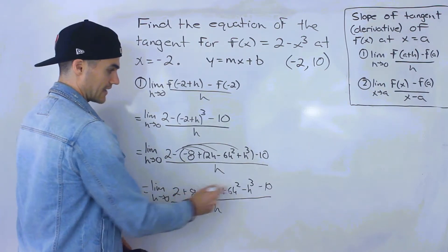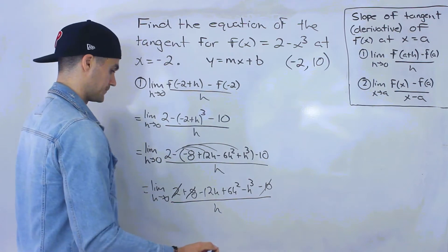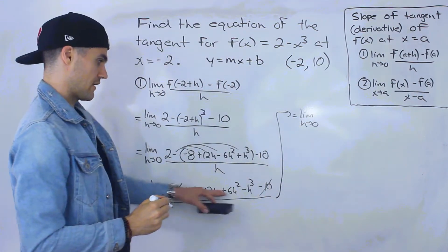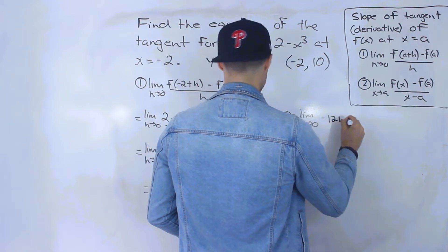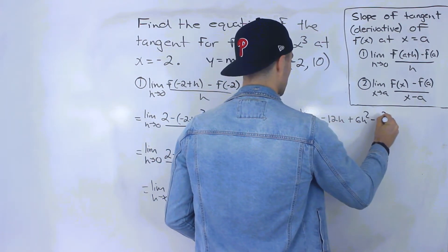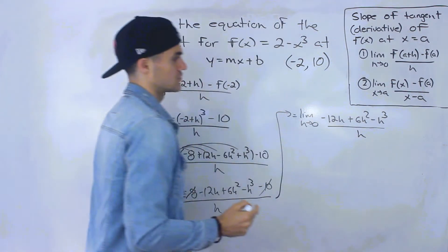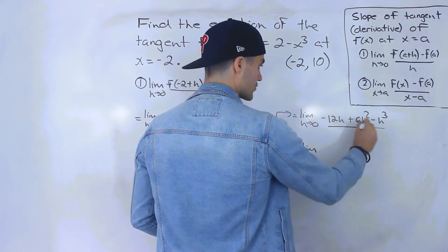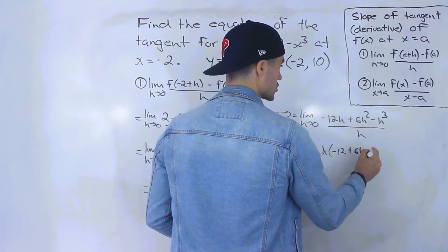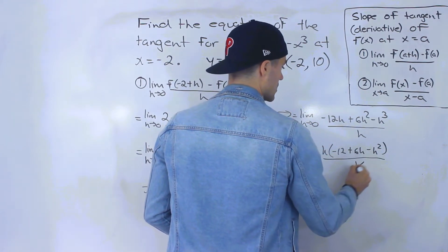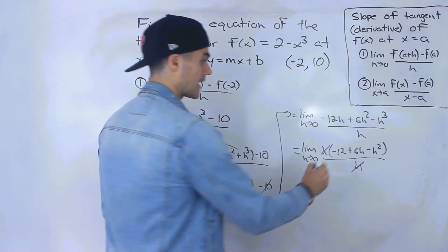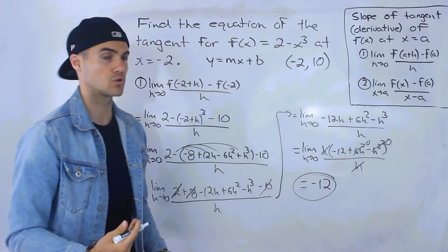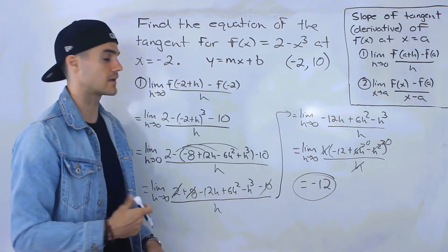Notice that 2 plus 8 is 10 and minus 10, so those net out to zero. What remains is negative 12h plus 6h squared minus h cubed all over h. We can factor out an h in the numerator, giving negative 12 plus 6h minus h squared all over h. The h's cancel, and plugging in 0 for the remaining h's leaves us with negative 12. So negative 12 is the slope of the tangent at x equals negative 2.